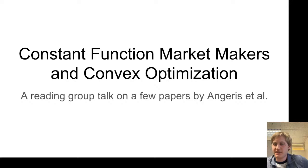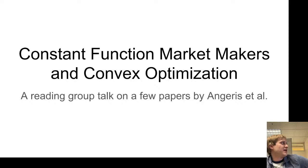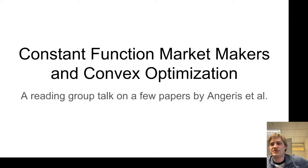Now it says that I'm live and it should be possible for me to go ahead. So this is a paper. I sort of think of it as one of a few papers by Angeris et al on constant function market makers and their relation to convex optimization — ways that convex optimization can be used, and how manipulating constant function market makers can be an application of convex optimization.